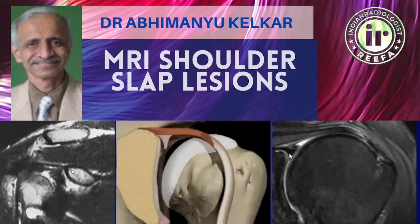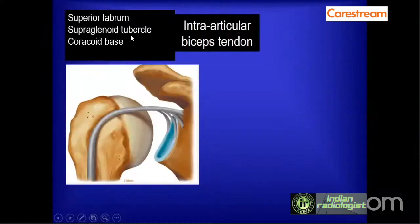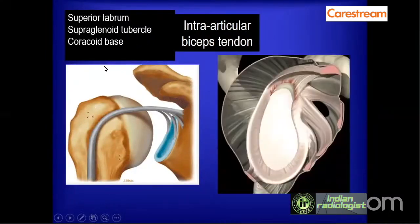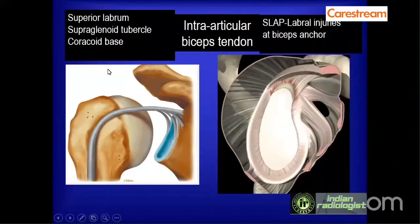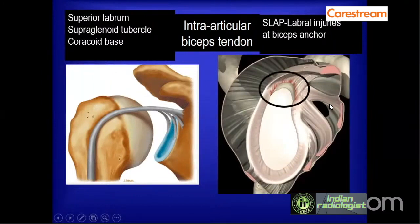The biceps tendon partly inserts into the superior labrum, the supraglenoid tubercle, and the base of the coracoid process. The part of the glenoid where the biceps insertion occurs is called the biceps anchor, and SLAP lesions are defined as lesions of the glenoid labrum which surround the biceps anchor.